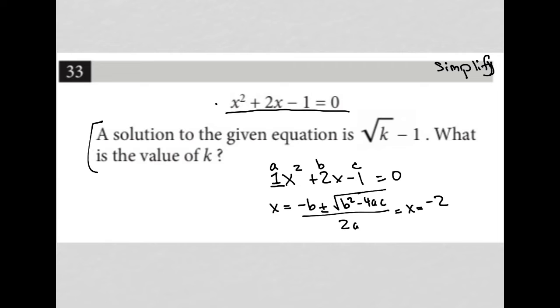This becomes negative 2 plus or minus the square root of b squared, which would be 4, minus 4a is just 1, times c is negative 1, all over 2a. Again, a being 1, so just over 2.